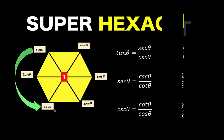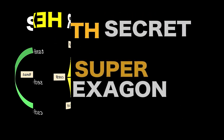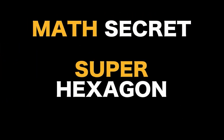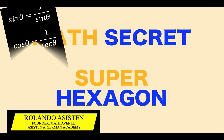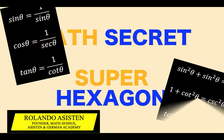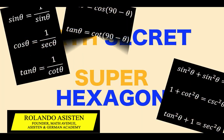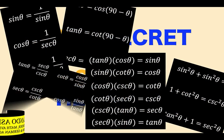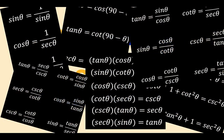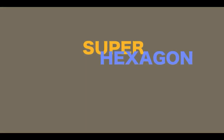In this video, we are going to talk about a math secret. This is about super hexagons. Do you want to know how to memorize different trigonometric identities? Well, the secret is not to memorize, but to use a mnemonic device which we call the super hexagon.